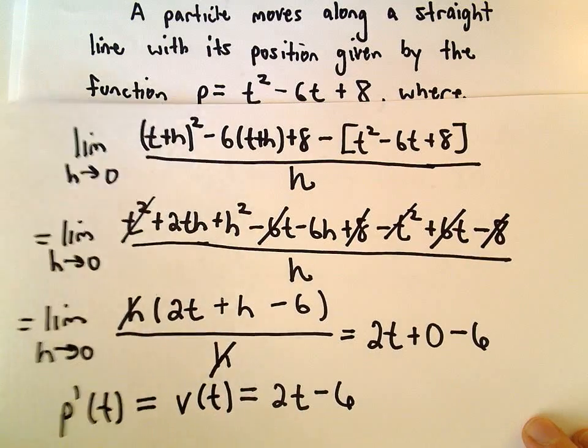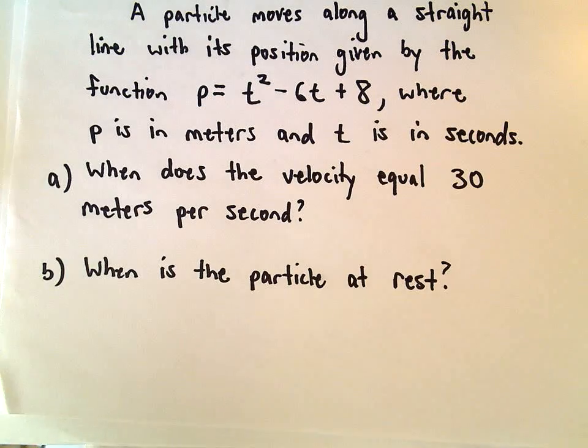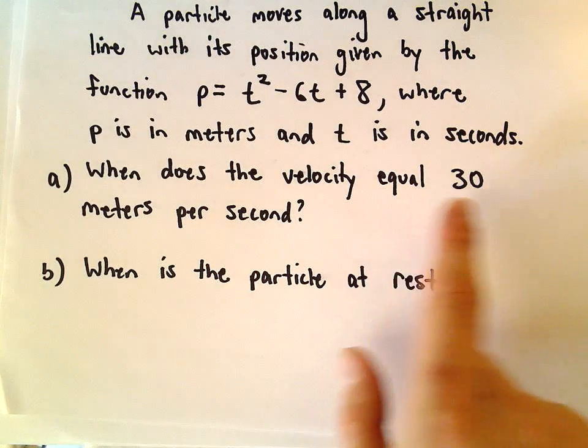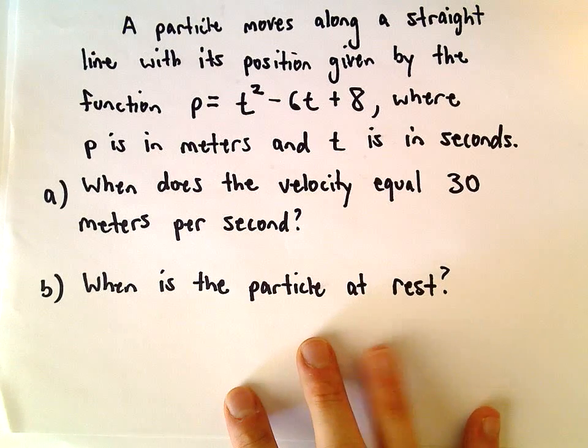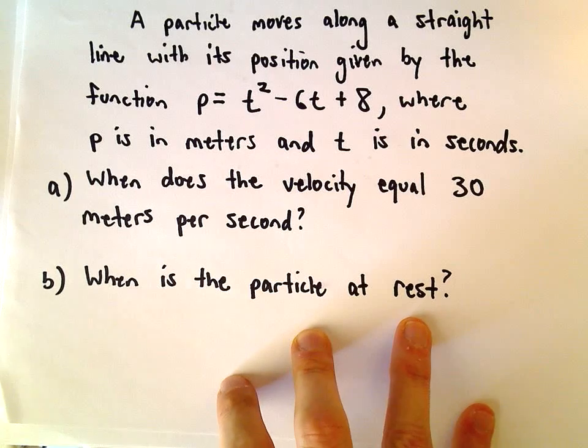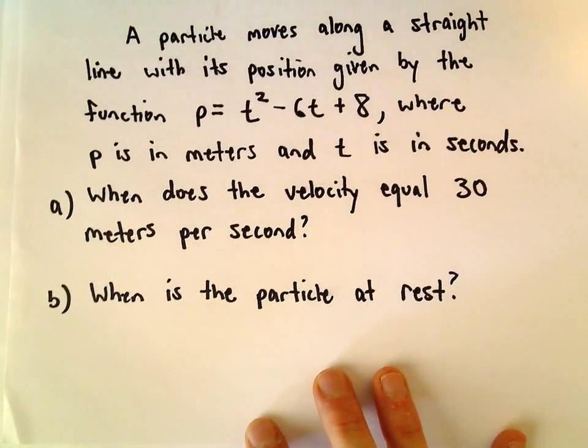All right, so let's go back and see what they actually wanted us to do. We want to figure out when the velocity equals 30 meters per second, and when the velocity is 0. If the velocity is 0, that's when the particle would be at rest.